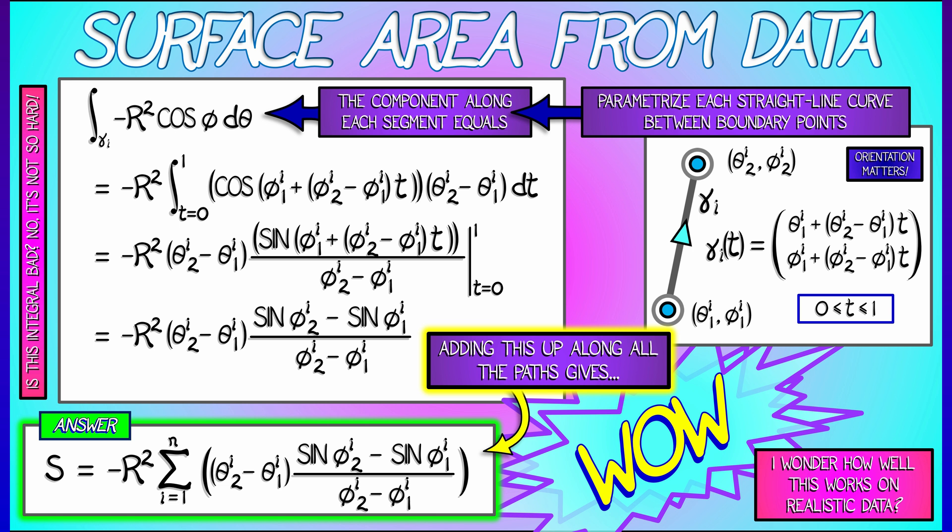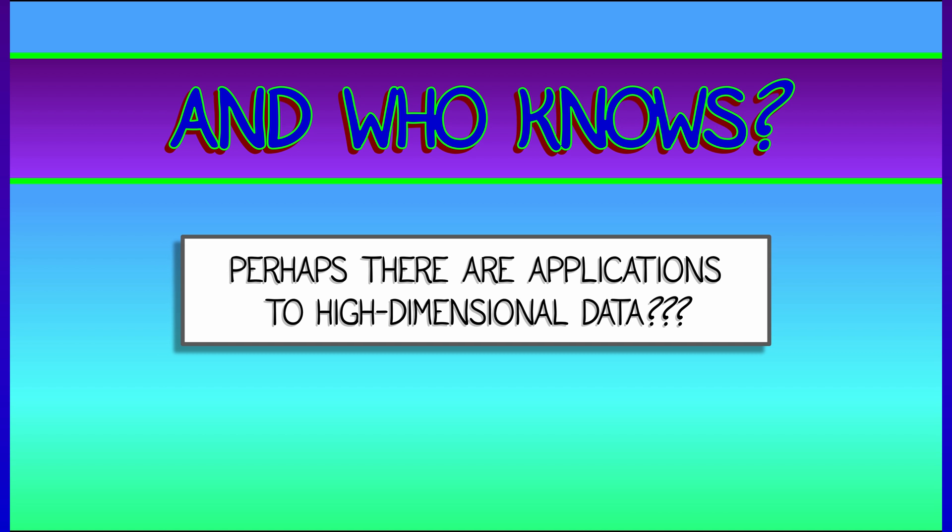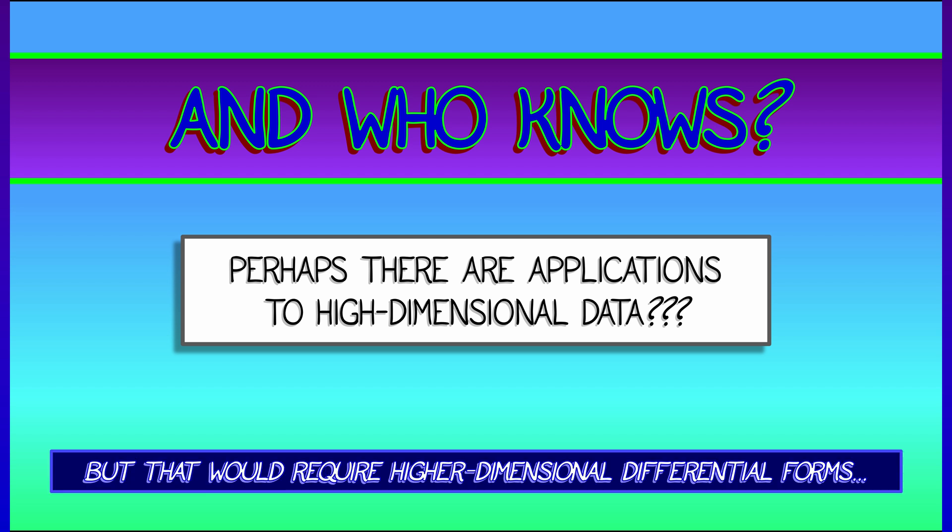But hey, I also wonder, what else could we do? I mean, we've seen some really cool applications of Green's theorem, of Gauss' theorem, and now of Stokes' theorem to problems of estimating geometry in dimensions 2 and 3. But of course, a lot of problems in data are higher dimensional. Can we get applications of Green, Gauss, Stokes, something like that, to higher dimensional data as well?